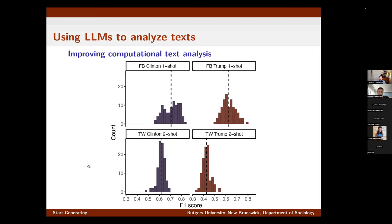We also do experiments looking at one-shot and two-shot learning, where we provide pre-labeled examples and use those to make predictions. We find quite wide variability in model performance depending on which example we give it. These histograms show the distribution of our F1 scores — effectively measuring accuracy across different variations of our prompts. Depending on the prompt, some examples lead to pretty good performance and others work badly. I think there's a lot of room for experimentation to see what works and what doesn't, and in what settings we might want to rely on the model versus doing a more conventional fine-tuning approach.